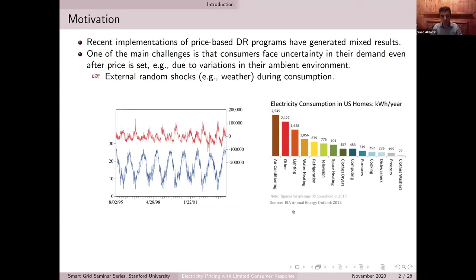This is the same graph I showed previously for electricity consumption in Spain. The blue line at the bottom represents temperature, which has an obvious cyclical pattern. When the outdoor temperature is too high or too low, we observe a peak in electricity consumption. Temperature plays a big role in electricity consumption, and many of these temperature changes happen unexpectedly. According to EIA energy outlook, air conditioning makes up a big part of electricity consumption for an average household — close to 20 percent on average — and on a hot summer day or very cold winter day, it can increase to 60 percent.